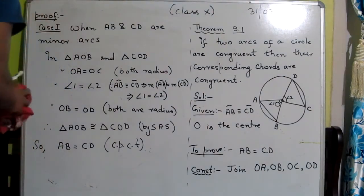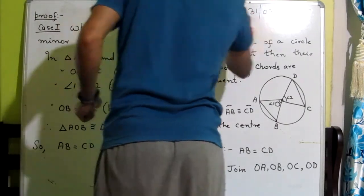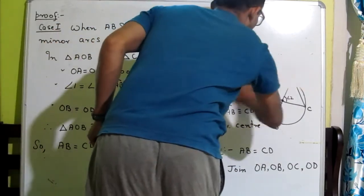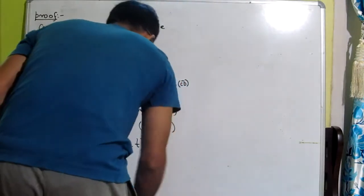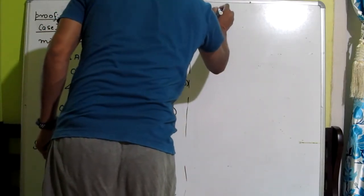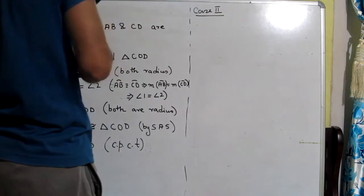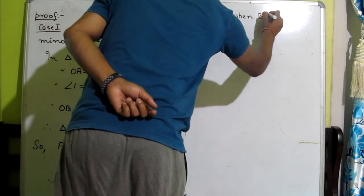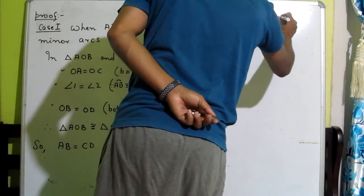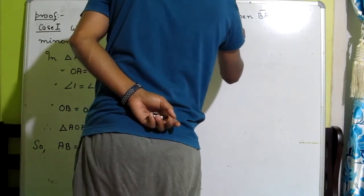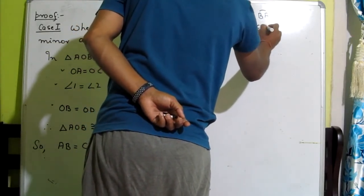Now Case 2: when AB and CD are major arcs.